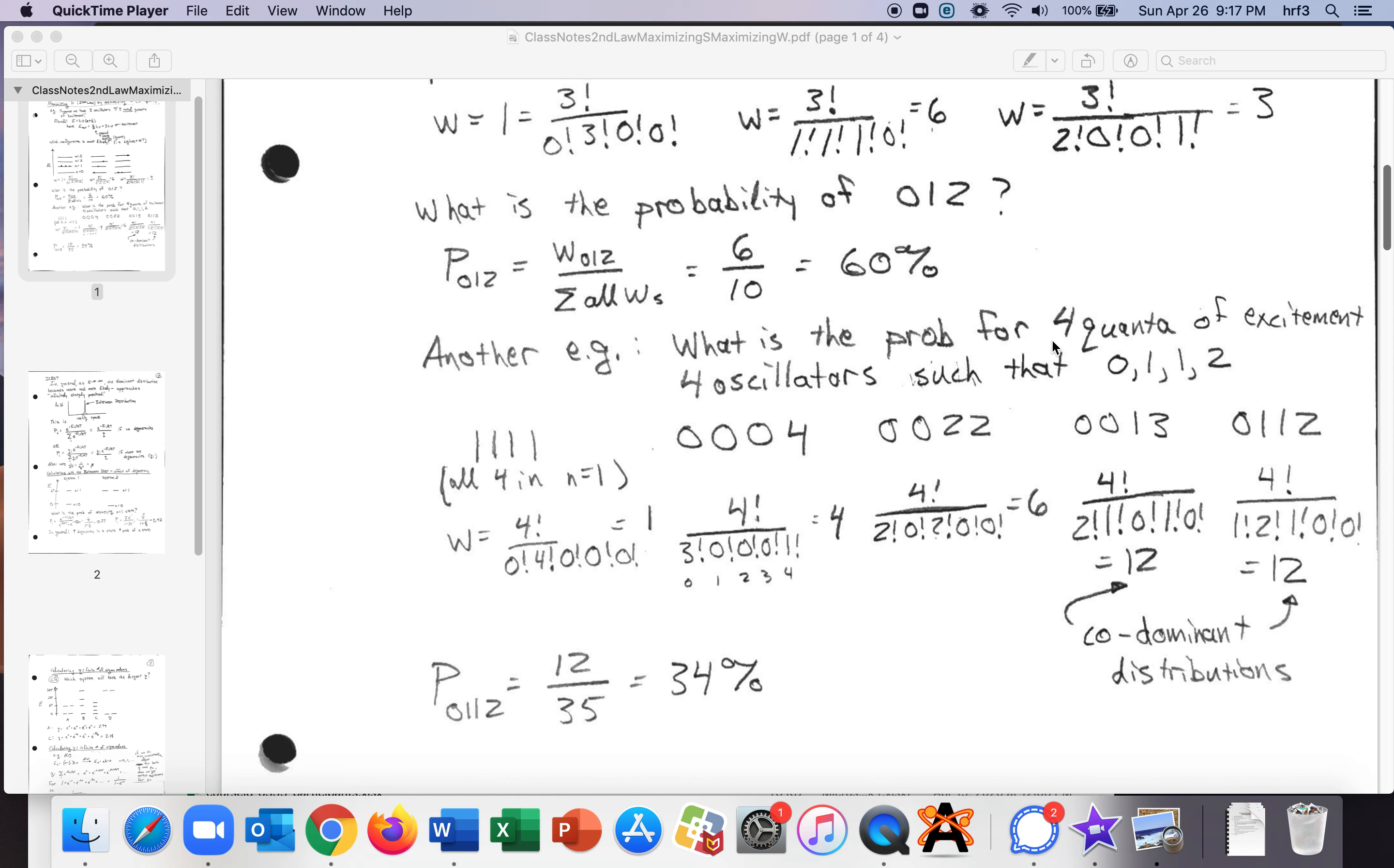Okay another example what if we had four quanta of excitement with four oscillators and we wanted to know what's the probability of being in 0 1 1 2 so in other words one particle in the ground state two in the first excited state and one in the second excited state.